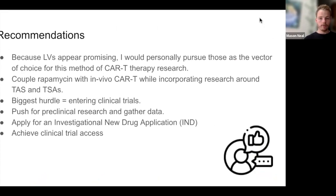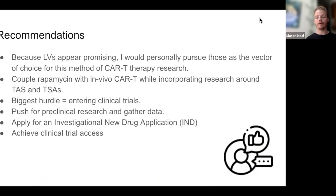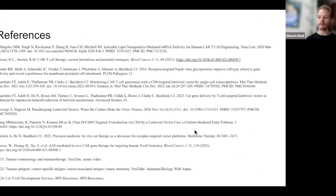My recommendations would be to pursue lentiviral vectors, since they appear to be the most promising in terms of specificity when coupled with DARPINs. I would combine that with rapamycin as well as other small molecule drugs currently in cancer research, to see how they could be used to optimize this therapeutic and run further experiments to hone it in. Additionally, performing greater research around tumor-specific antigens to highlight ones that can be targeted in a way that results in fewer off-target effects on normal tissue. Thank you so much for listening.